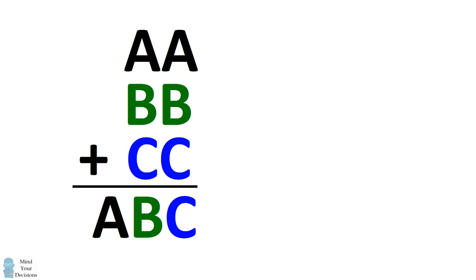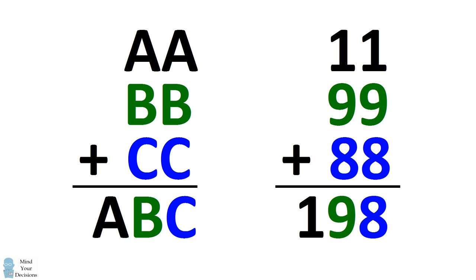So to solve this equation, we get the unique result that this is the answer. 11 plus 99 plus 88 equals 198.